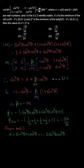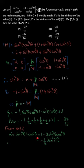We are interested in the minimum value of alpha. We write alpha as 1 minus (1/2)·sin²(2θ). Since there is a minus sign, alpha is minimum when sin²(2θ) is maximum. The maximum of sin²(2θ) is 1, so the minimum value of alpha is 1 minus 1/2, which equals 1/2.